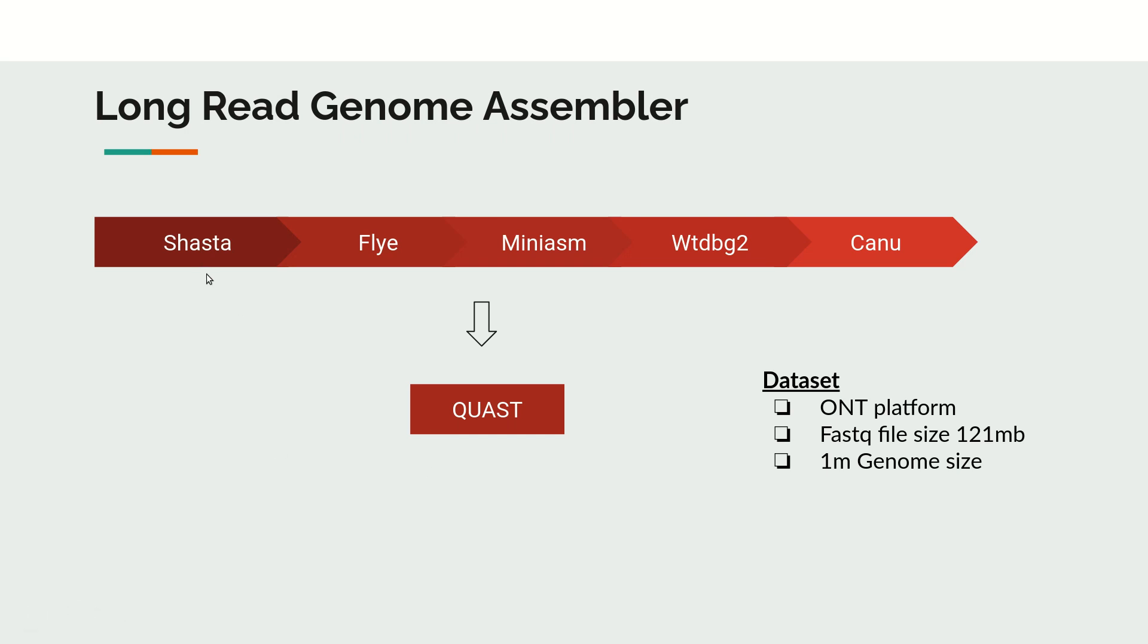There are many long-read genome assemblers available, and widely used tools are Shasta, Flye, Miniasm, Wtdbg2, and Canu. In this series of videos, we will explore each of these tools. We will start with Shasta, followed by Flye, then Miniasm, then Wtdbg2, and end with Canu.